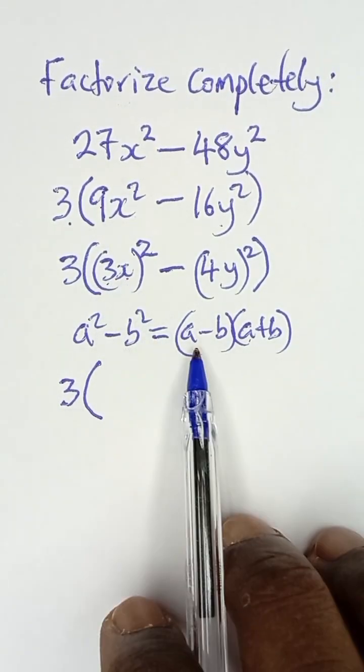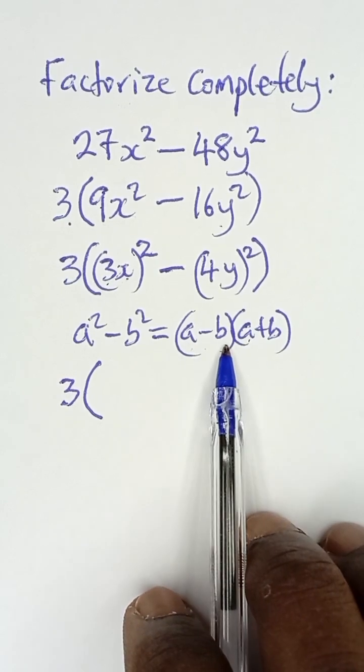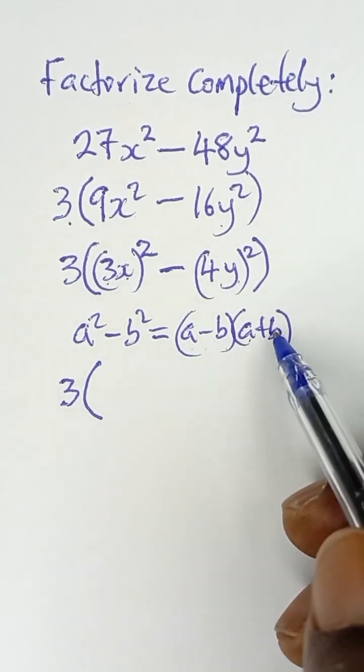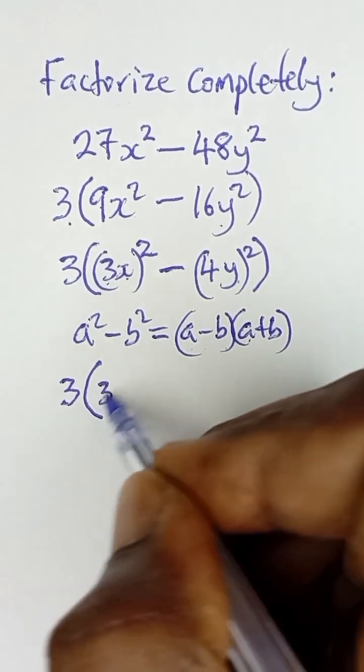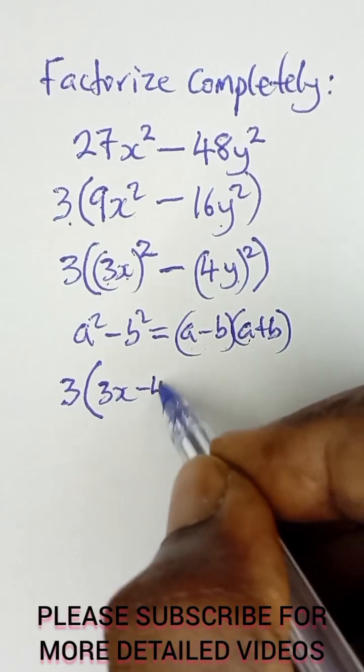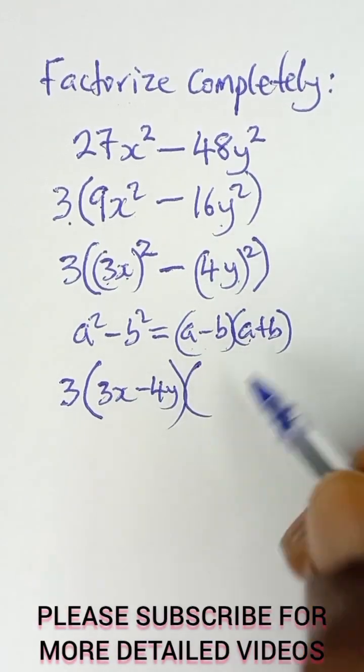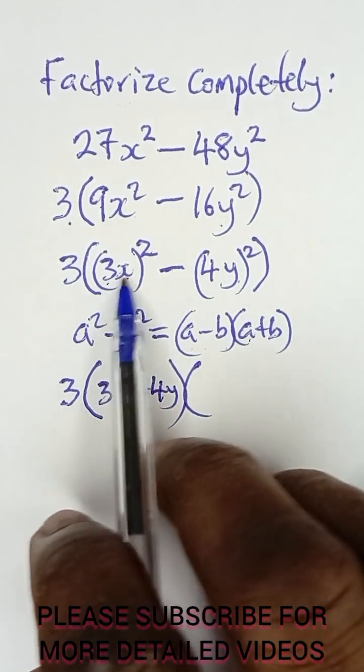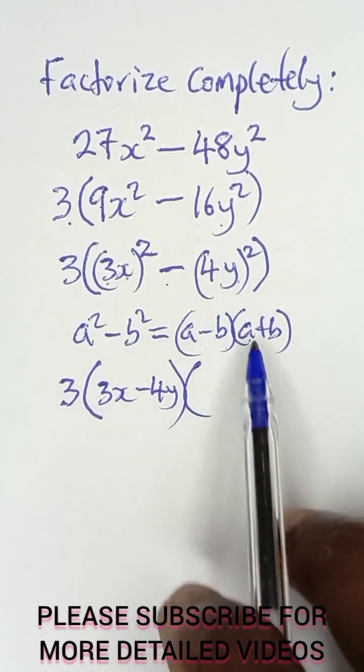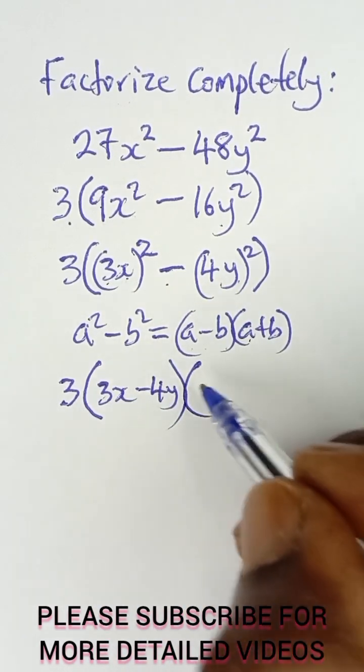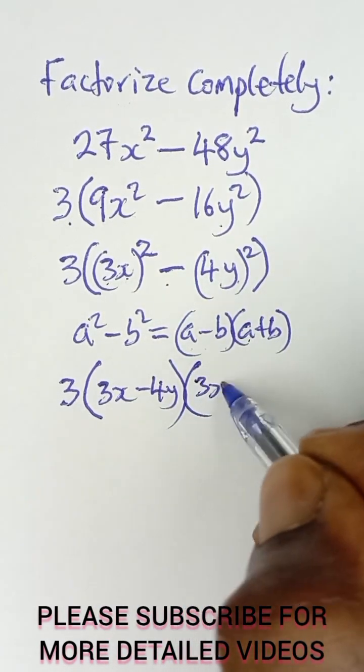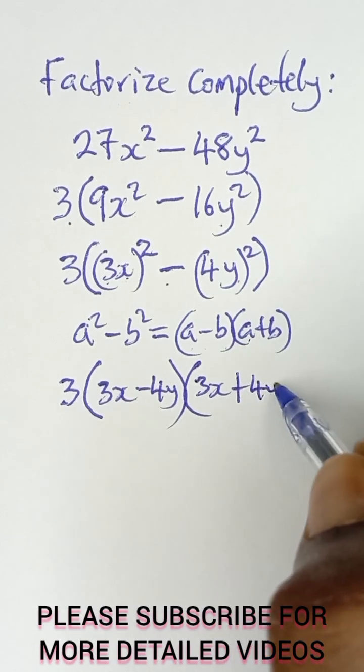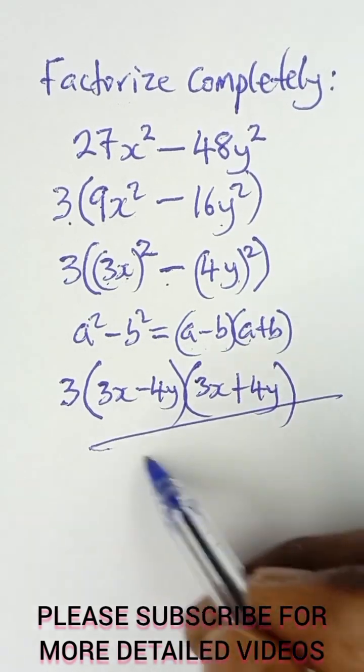And then I have 3x, just like this, minus 4y. So it becomes (3x - 4y). And then I open up another bracket: 3x plus 4y. So I have 3(3x - 4y)(3x + 4y), and this is the completed factored form.